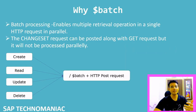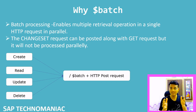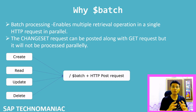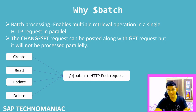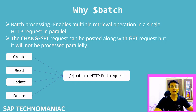We will start with the basic definition again. As you already know from my last video, we use $batch because we want to process data in parallel — we want to create, read, update, and delete in one single call. Instead of making parallel calls or using the $expand query option, we put all query options in one batch and execute in one go. This is called batch processing: enabling multiple retrieval operations in a single HTTP request.